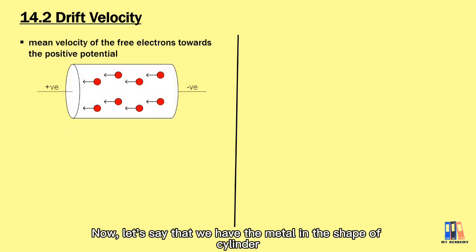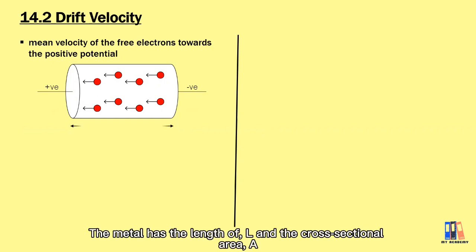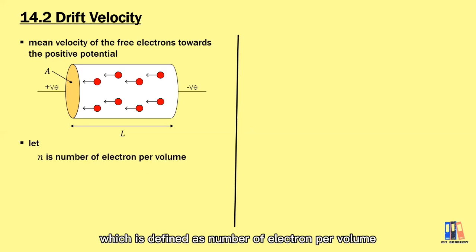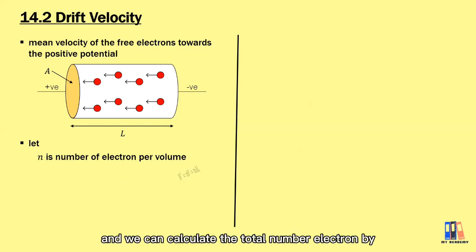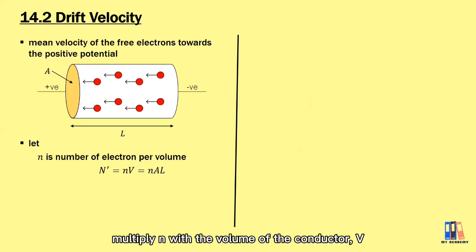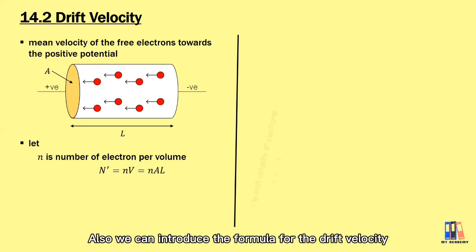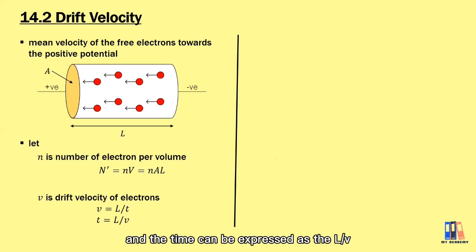Now let's say we have a metal in the shape of a cylinder with electrons inside. The metal has a length L and a cross-sectional area A. We introduce the variable electron density n, defined as the number of electrons per unit volume. The total number of electrons is n multiplied by the volume, which is area times length. We also introduce the drift velocity V equal to length divided by time, so time equals length divided by drift velocity.